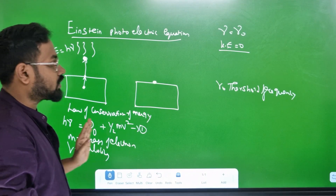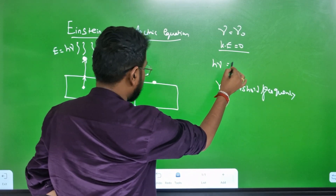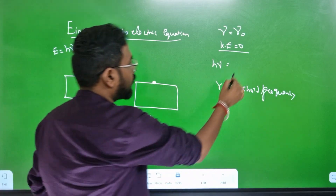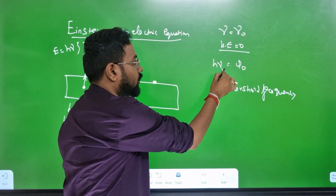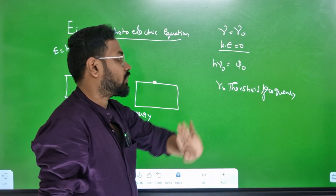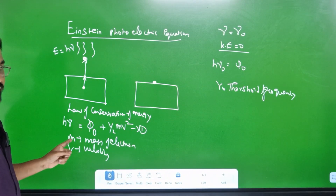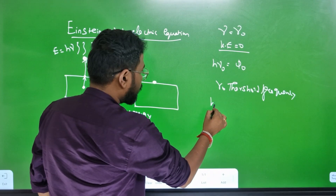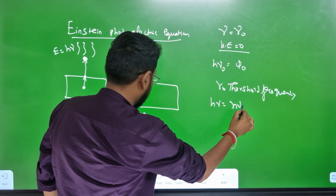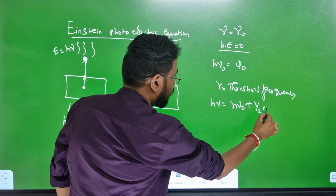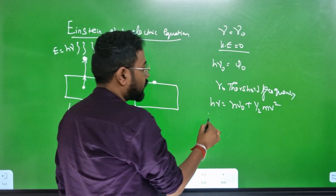This is worth two marks. When kinetic energy is zero, H-nu is equal to the work function. Here, nu equals nu-zero, the threshold frequency. We substitute: H-nu is equal to H-nu-zero plus half m-v-squared. This is Einstein's photoelectric equation.